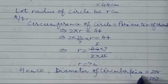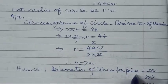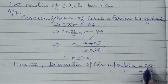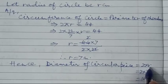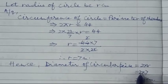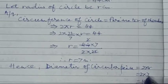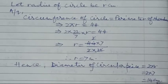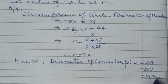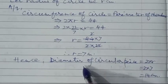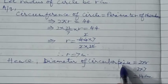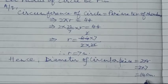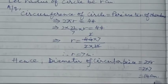We have to find the diameter of the circular piece. Diameter = 2 × radius = 2 × 7 = 14 cm. Therefore, the diameter of the circular piece of wire is 14 cm.